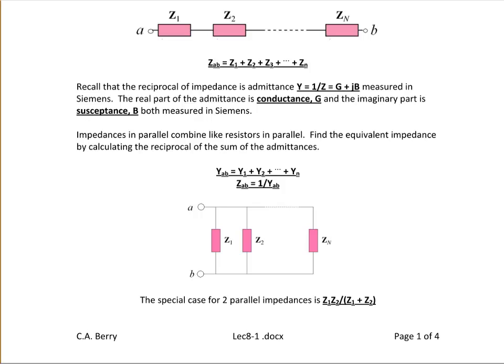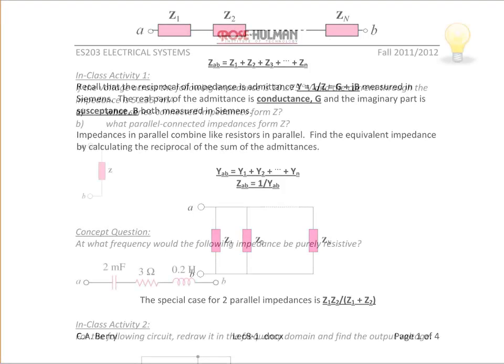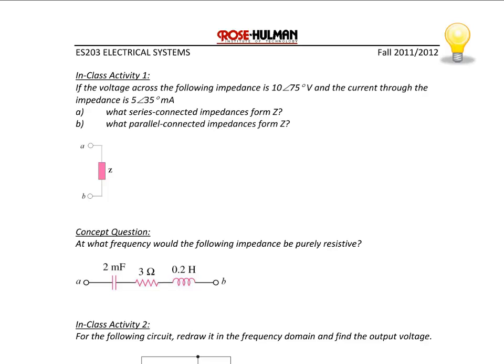Just like with parallel resistors, there is a special case for two parallel impedances: the product over the sum. For example, if the voltage across a given impedance is 10∠75° volts and the current through it is 5∠35° milliamps, we need to find what series-connected impedance forms Z.